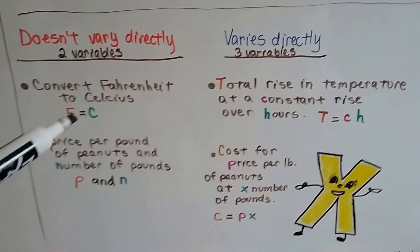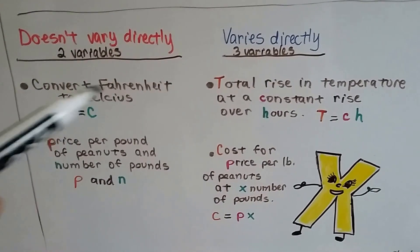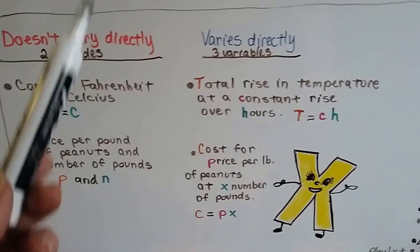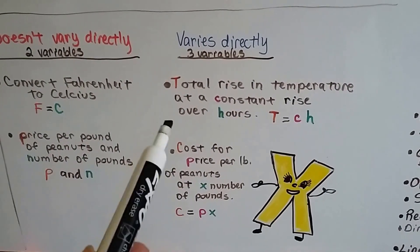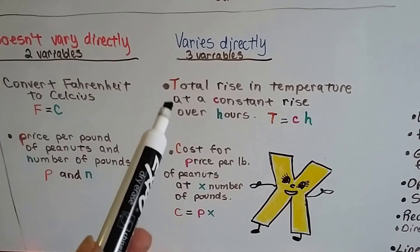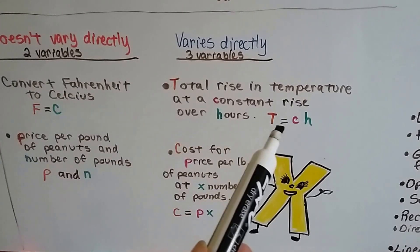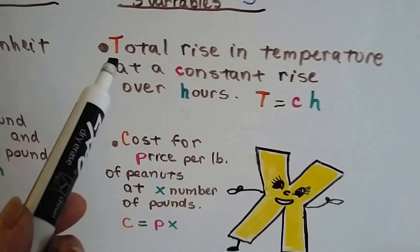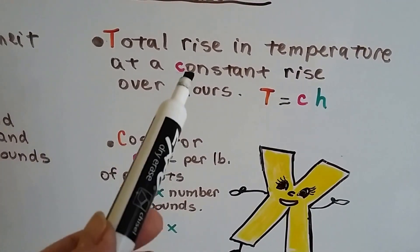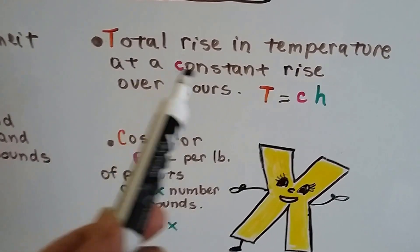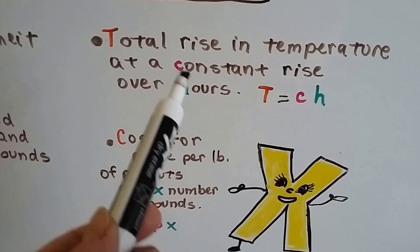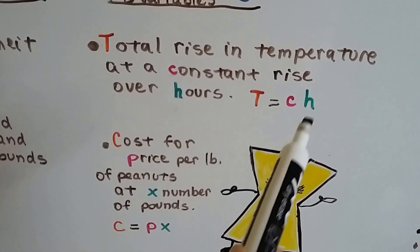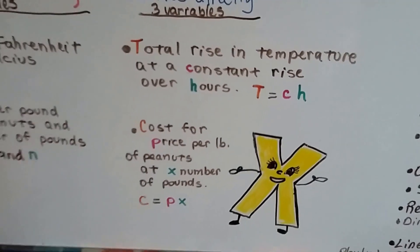If we were to convert Fahrenheit to Celsius, that's just two things, Fahrenheit to Celsius. So that doesn't vary directly. But if we were to say the total rise in temperature as a constant rise over hours, then we would have three variables. We would have the total rise in temperature as the y value, the constant rise, like maybe it's rising two degrees every hour. So that would be the k part, the C here for constant. And the hours would be the time. That would be the third variable.